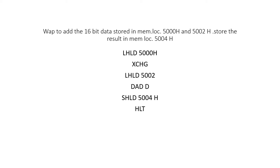Once the data is in H and L, we exchange it — whatever is in HL will go to the D pair of registers. Then again we put the data of 5002 and 5003 in HL pair. Now one set of data is in D pair and another set is in HL pair. We have an instruction called DADD which adds the content of D with HL. When you write DADD, the content of 5000 and 5001 is added to 5002 and 5003, and the result after DADD is placed in HL pair.